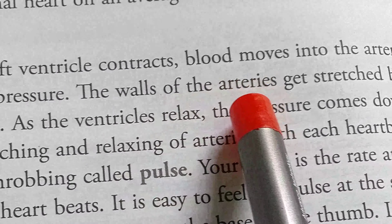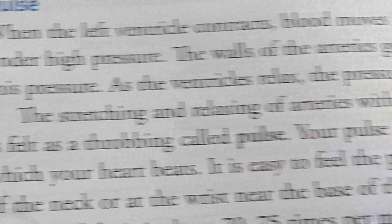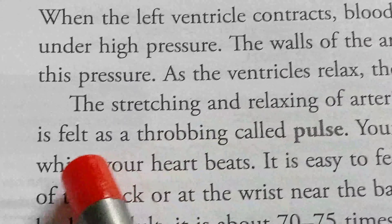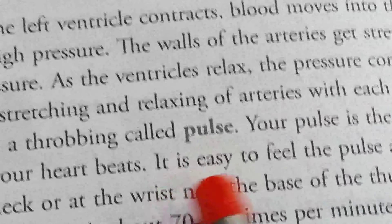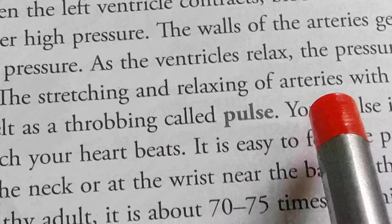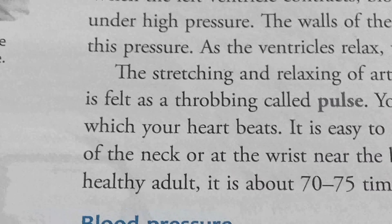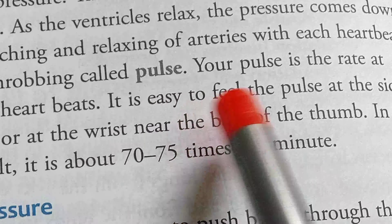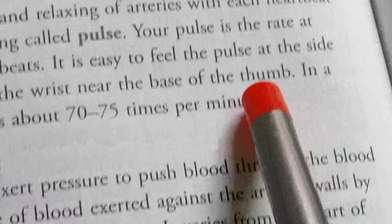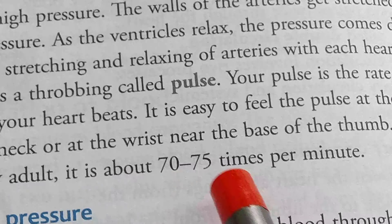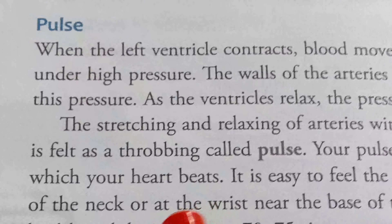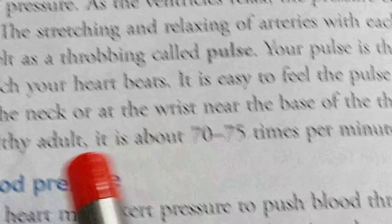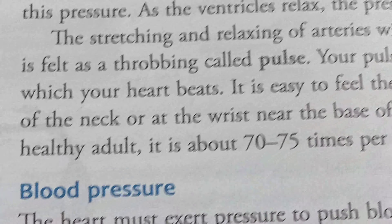When the left ventricle contracts, blood moves into the arteries under high pressure and the walls of the arteries get stretched. As the ventricle relaxes, the pressure comes down. This stretching and relaxing of arteries with each heartbeat is felt as a throbbing called the pulse. It is easy to feel the pulse at the side of the neck or the wrist near the base of the thumb. In a healthy adult, the pulse is about 70 to 75 times per minute.